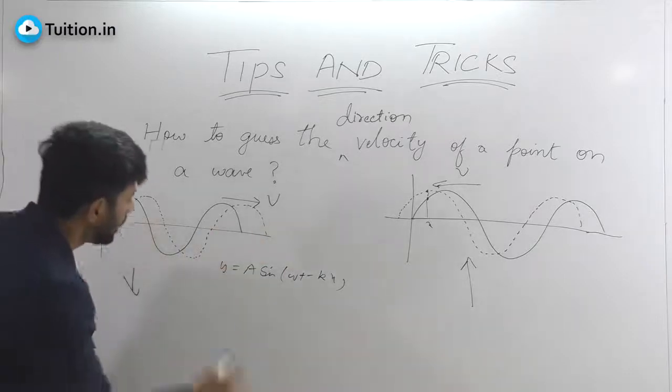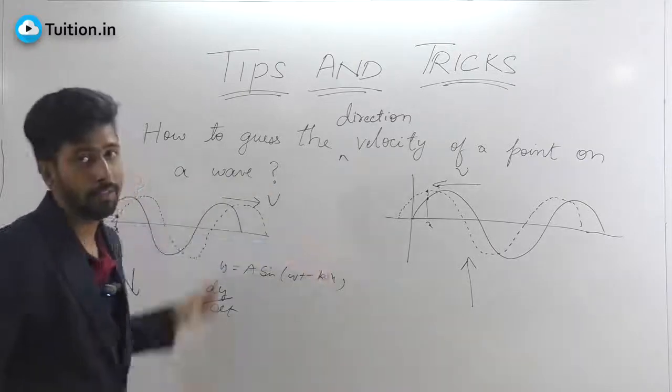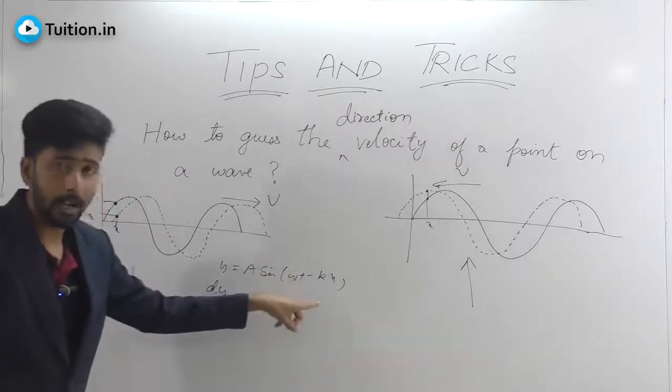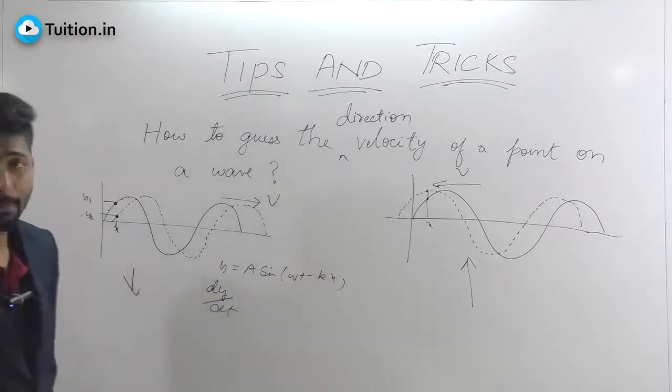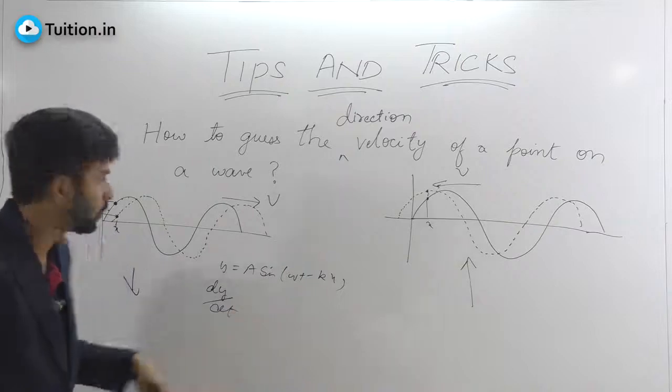You will have the equation of the wave given to you. You will differentiate with respect to time, you will put the value of x, you will put the value of time and then you will get the velocity. And if it comes out to be positive, that means the particle was going up. If it comes out to be negative, the particle was going down. But that is the mathematical way of doing it.